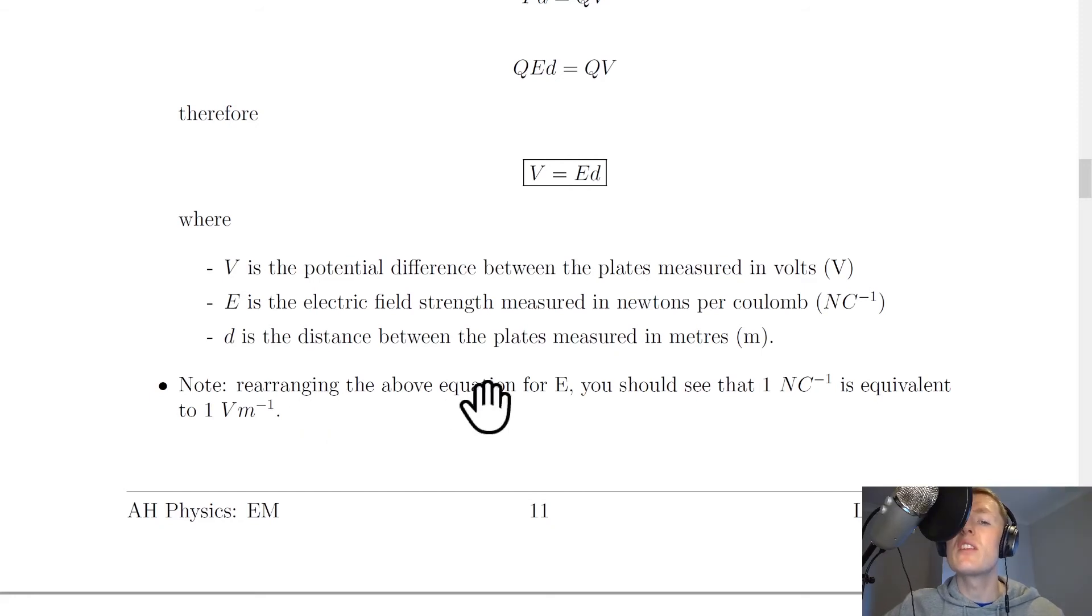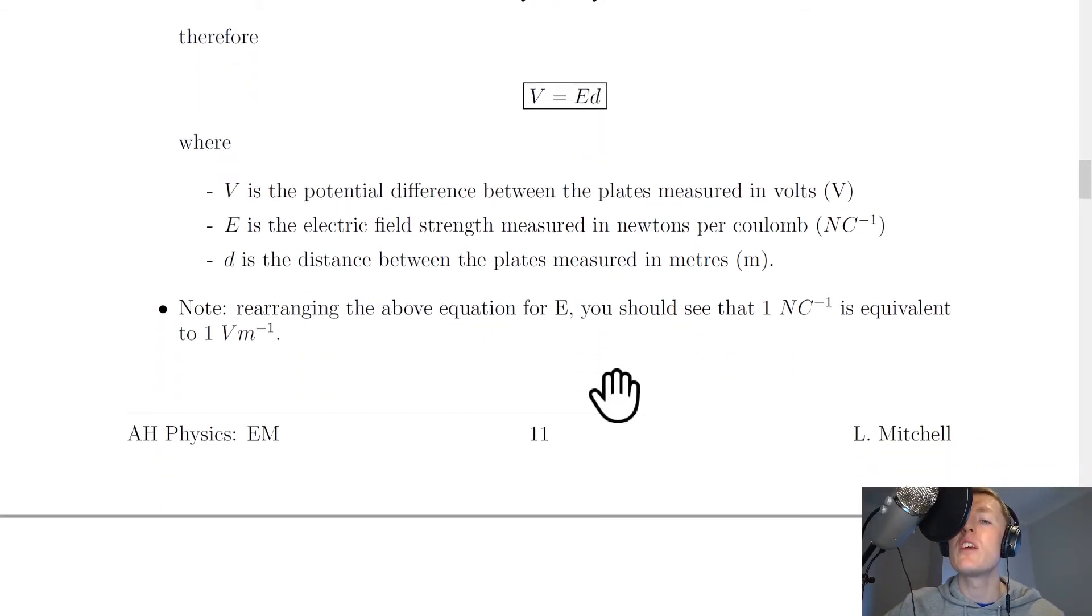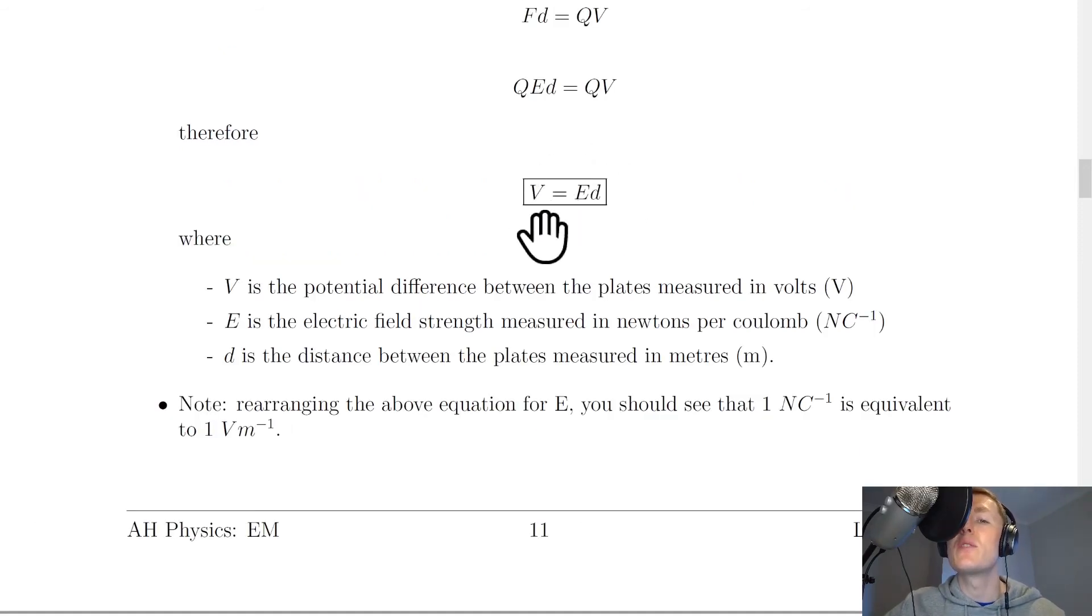And lastly, note that rearranging the above equation for e, you should see that one newtons per coulomb is equivalent to one volt per meter. So these units are equivalent, and you can get away with stating either one for your units of electric field strength. So if we rearranged this to get e equals v over d, then we would have volt divided by meters, which gives us the volt per meter part for these units.